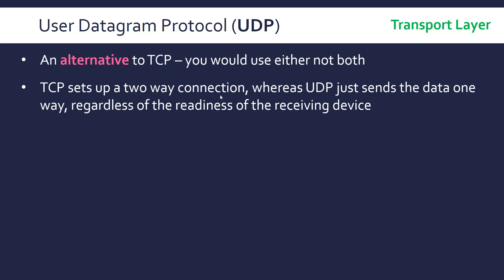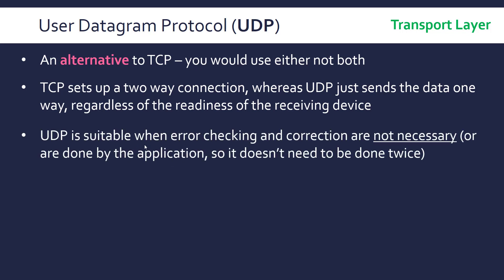TCP sets up a two-way connection, whereas UDP just sends data one way regardless of the readiness of the receiving device. With TCP there is an acknowledgement sent back, but UDP is a one-way connection with no acknowledgement. UDP doesn't have error checking and correction built in — you might use it when this isn't necessary, perhaps because it's handled by the application and you don't want it done twice.